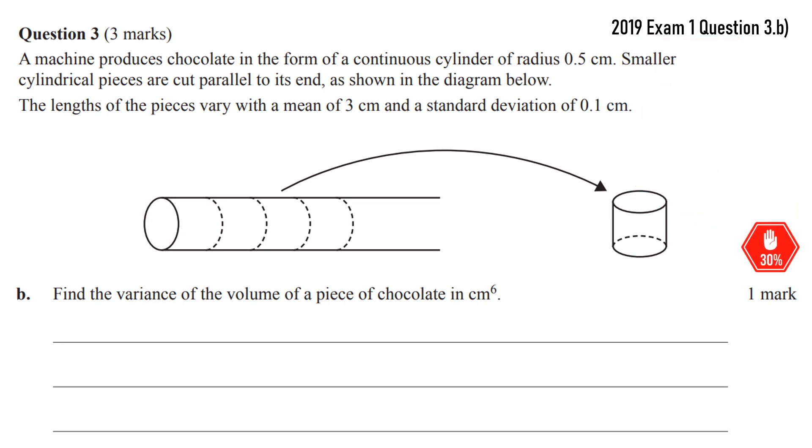So what do we know? It's a cylinder. So the volume should be pi r squared times the height. We're told the radius is fixed at 0.5 and the height is going to correspond to the length that's given in the question. So it's actually a random variable. We're told the lengths of the pieces vary with a mean of 3 and a standard deviation of 0.1. So that's going to be our random variable for the height.